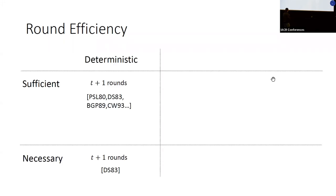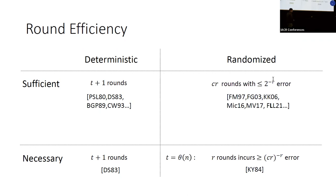Let's look at the landscape. We've known for a long time that for deterministic protocols, Byzantine agreement can be achieved in t plus one rounds, where t is the corruption threshold. This is not very good because it means the round complexity is linear in the number of parties for usual thresholds of n over three or n over two.